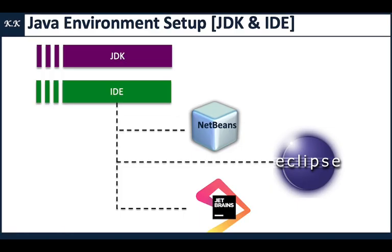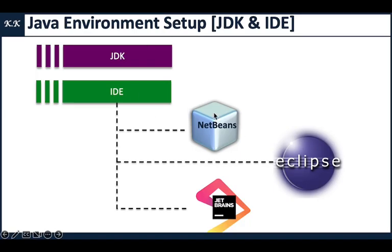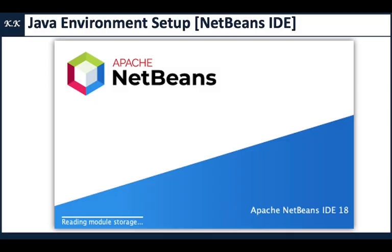To execute a Java program we need to set up the environment, which includes a JDK and an IDE. JDK works as a translator that helps us execute, understand, and debug Java code. An IDE, or Integrated Development Environment, is where we actually write our code. We have different IDEs available: NetBeans, Eclipse, and JetBrains. In this Java video series I will be using NetBeans.